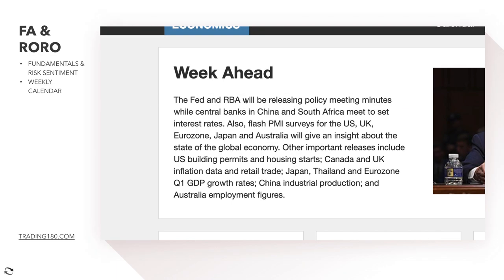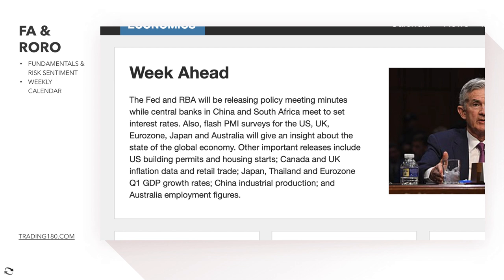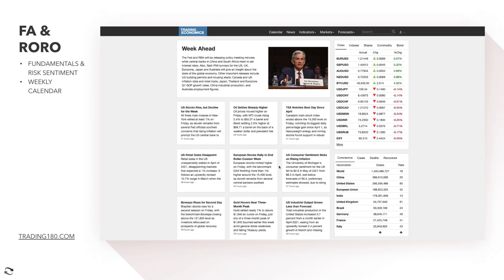This week on the economic calendar: the Fed and the Reserve Bank of Australia will release policy meeting minutes, while central banks in China and Africa are set to meet to set interest rates. Flash PMI surveys for the US, UK, Eurozone, Japan and Australia will give insight into the global economy. Other key releases include US building permits, housing starts, Canada and UK inflation data, retail trade, Japan and Eurozone Q1 GDP, China industrial production, and Australia employment figures — a very busy week.